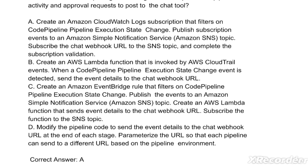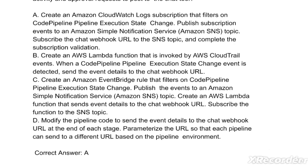Option C: Create an Amazon EventBridge rule that filters on CodePipeline pipeline execution state change. Publish the events to an Amazon SNS topic. Create an AWS Lambda function that sends event details to the chat webhook URL and subscribe the function to the SNS topic. Option D: Modify the pipeline code to send the event details to the chat webhook URL at the end of each stage, parameterizing the URL so that each pipeline can send to a different URL based on the pipeline environment. The correct answer is option C.